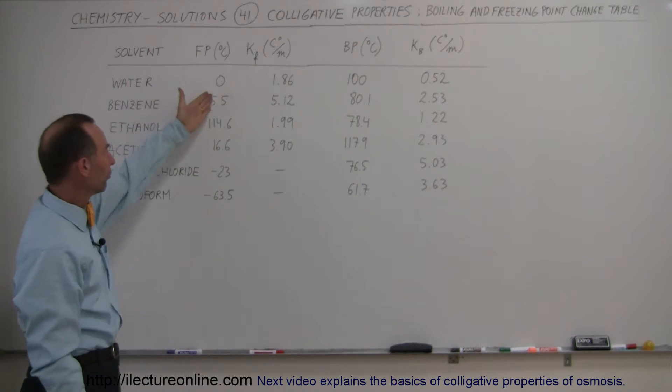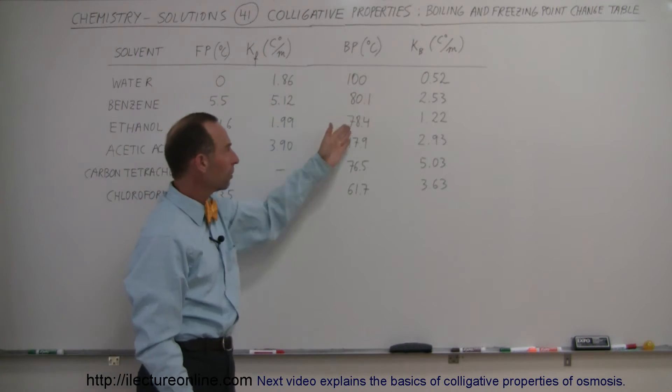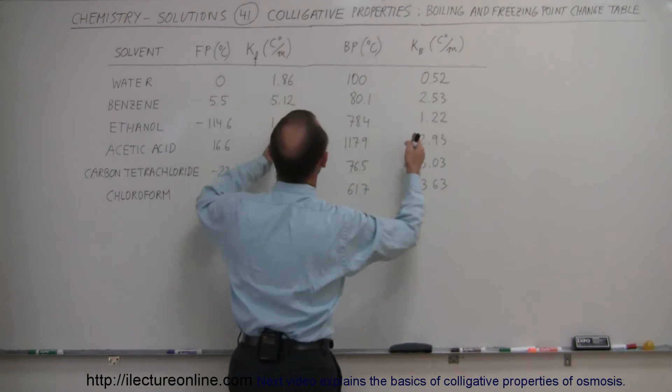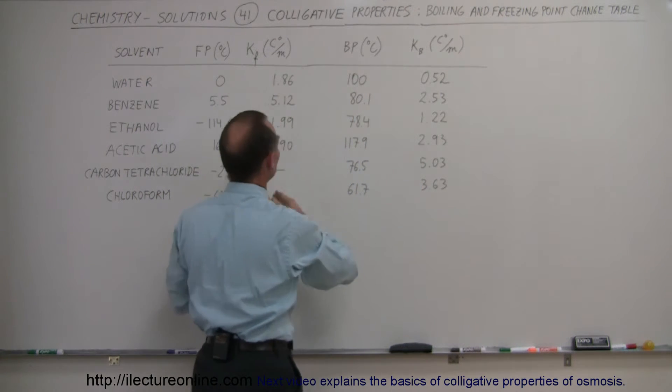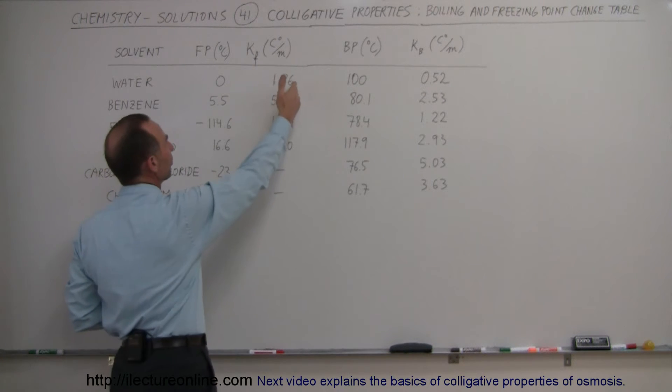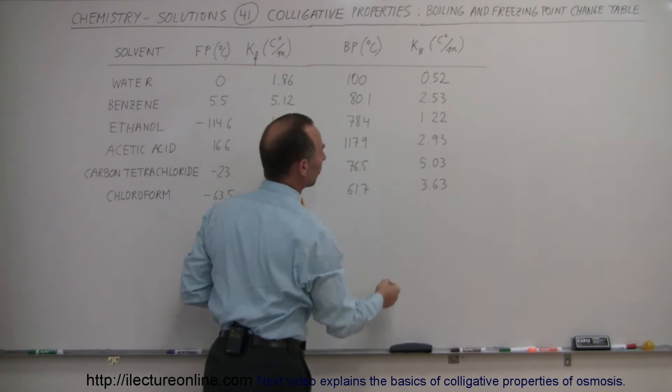Notice we have the normal freezing points, we have the normal boiling points, and then we have the constants that control or that form the change in the freezing point here and the change in the boiling point.